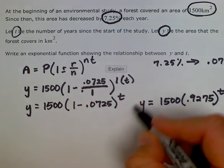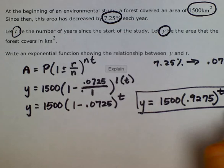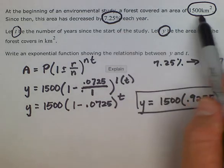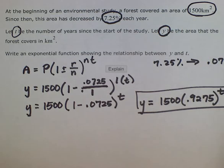And there's our formula that we could find out how much the forest is covered each year depending on what number of years we want, which is decreasing at a rate of 7.25% each year.